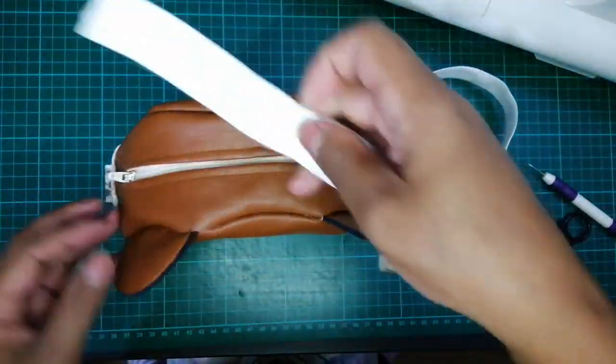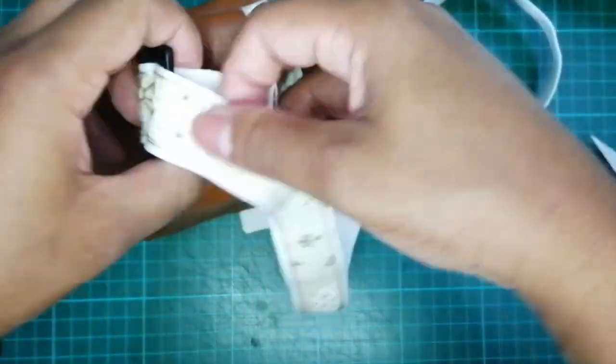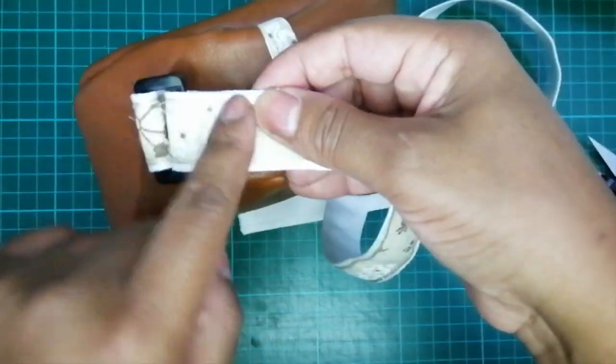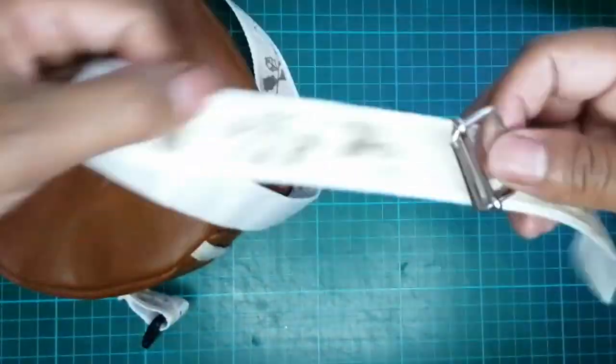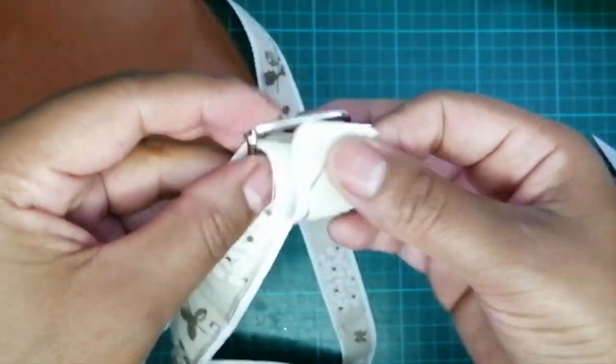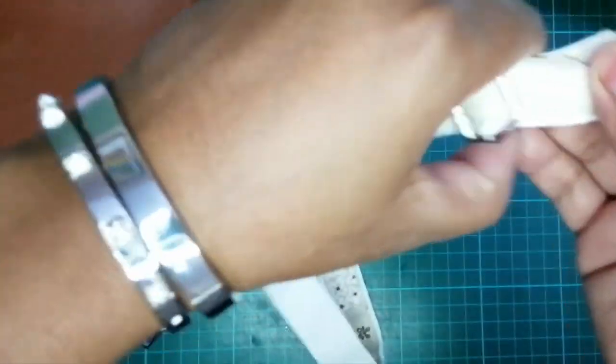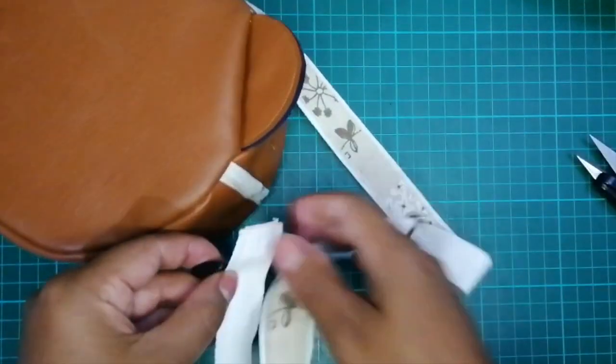Take your strap and thread it through one of the loop buckles and sew it in place. If you're making an adjustable strap, take your 3 bar slider adjuster and thread the strap through that and down to the other loop buckle.